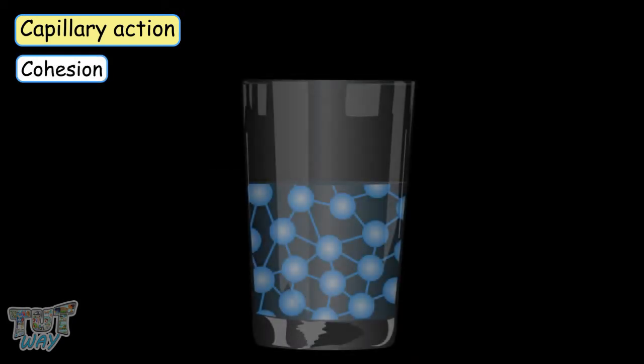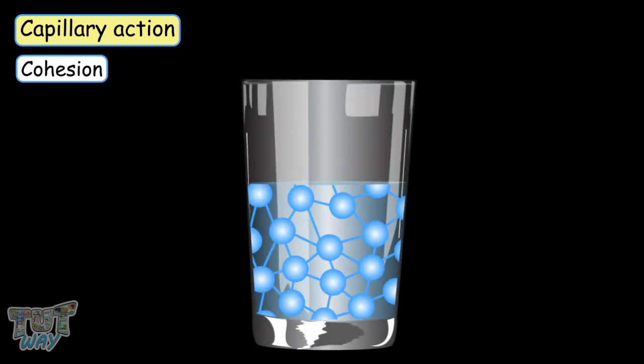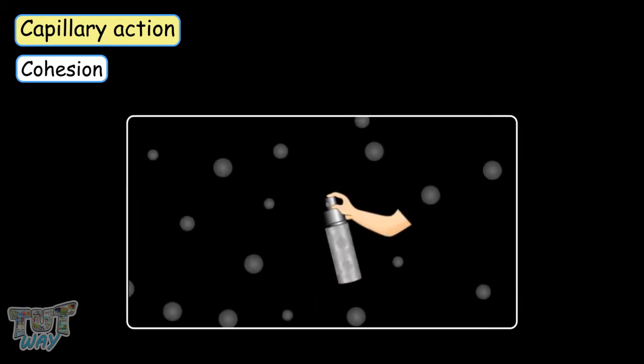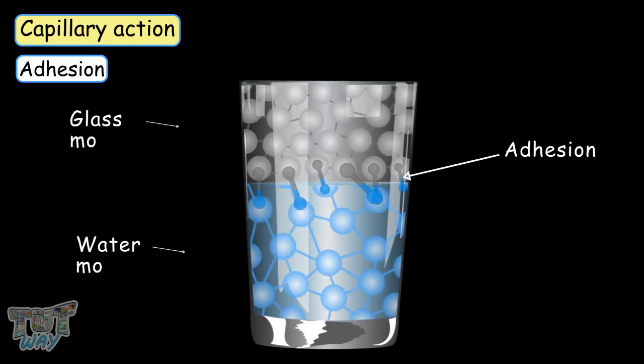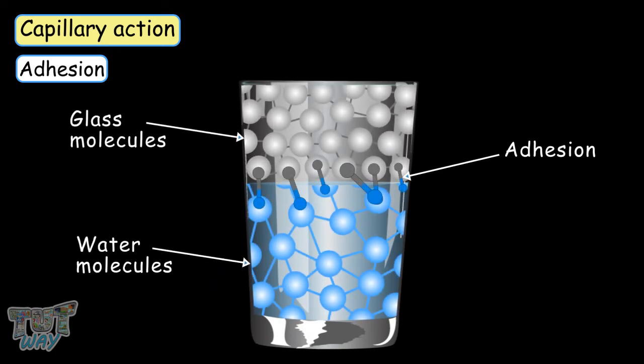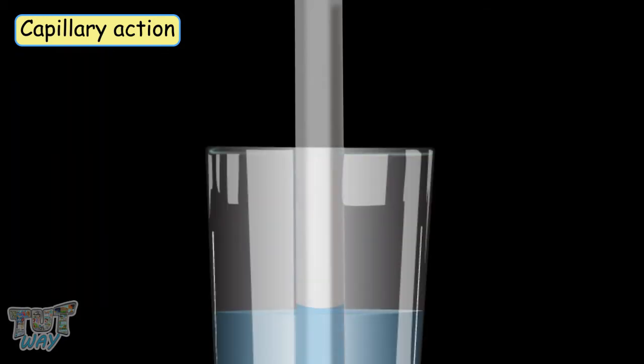Cohesion is when the water molecules are naturally attracted to each other and this forms temporary hydrogen bonds which causes the water to stay together and not spread like gases. Adhesion is the attraction of water molecules towards other types of molecules called hydrophilic molecules present in some solids.